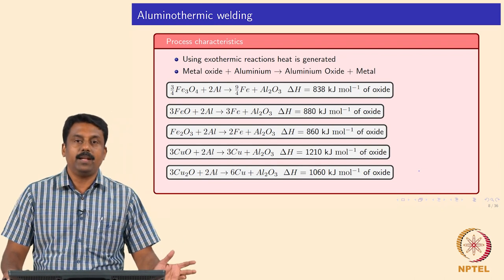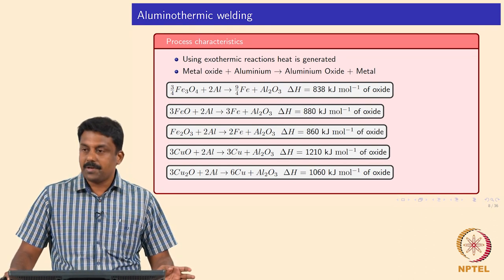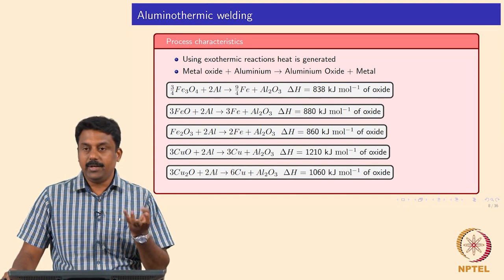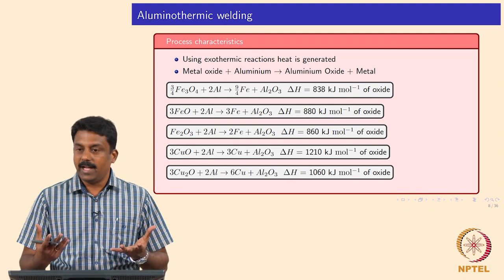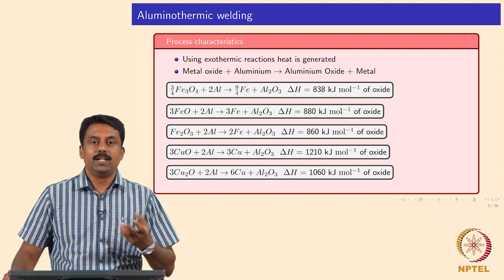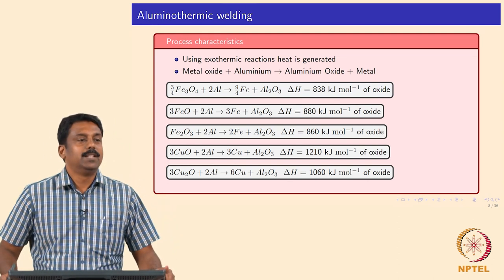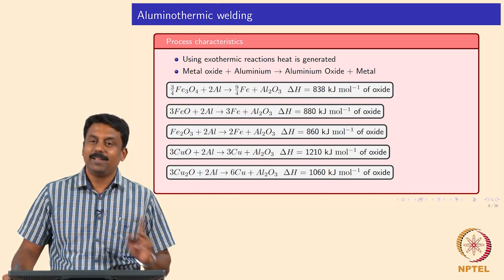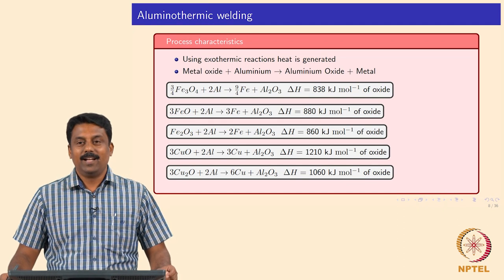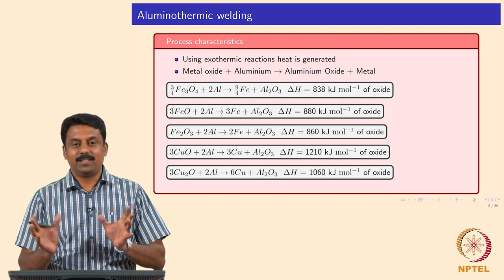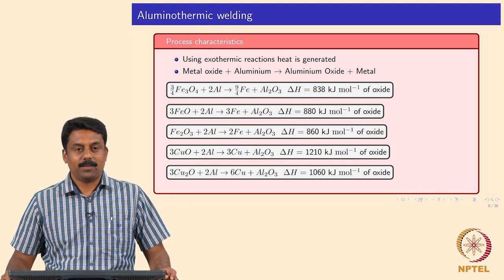The exothermic reaction reduces iron oxide or metal oxide by aluminium, producing aluminium oxide and generating excess heat that melts the reduced metal. This liquid metal fills the weld cavity. The process can be used to make liquid iron or liquid copper — in fact, reducing copper oxide by aluminium generates even more heat than reducing iron oxide. Next time you visit a railway station, look out for people doing this; you will see the thin containers of thermite and they will be welding the railway lines using thermite welding.